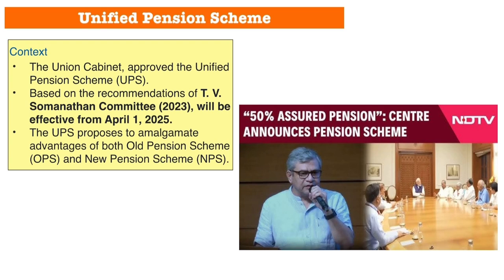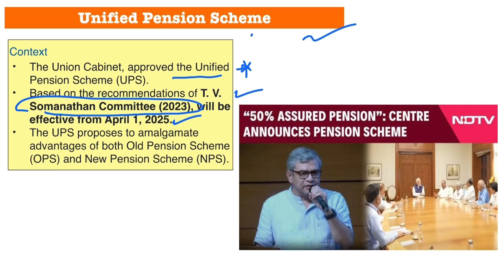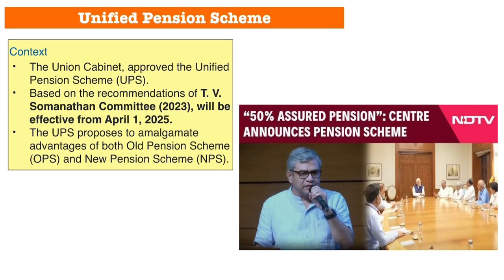Hello everyone, today I am here to discuss a very important topic which is the Unified Pension Scheme. Recently, the Government of India has launched the Unified Pension Scheme and this will be applicable from April 1, 2025. This scheme has been implemented by the DB Somnathan Committee and the Union Cabinet has recently approved this Unified Pension Scheme, which features a 50% assured pension.